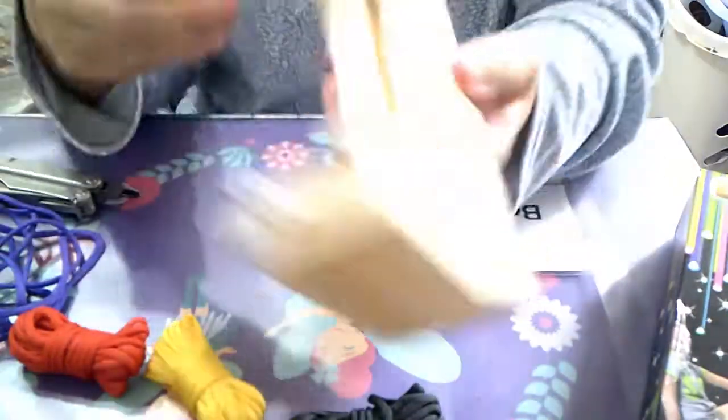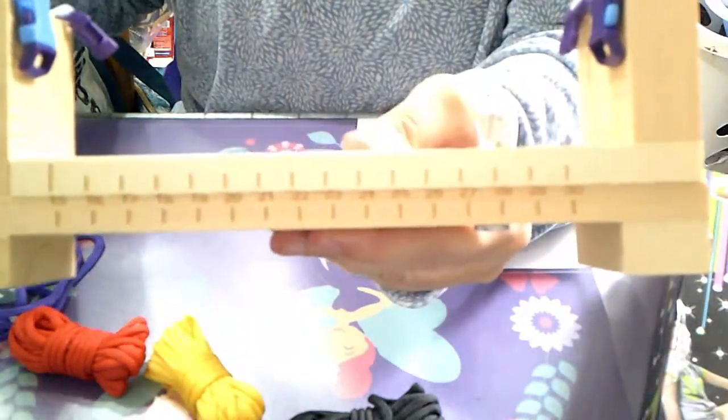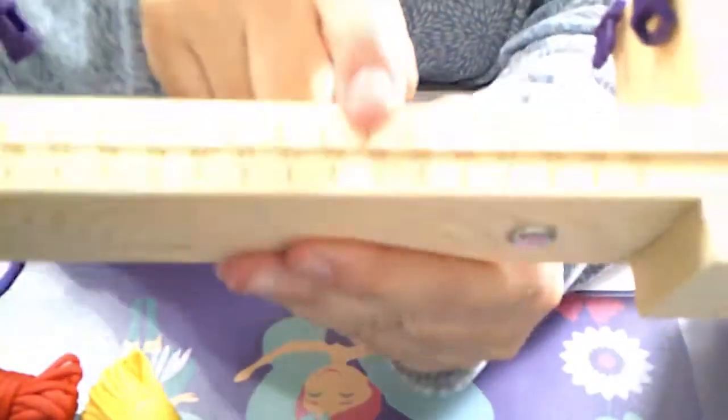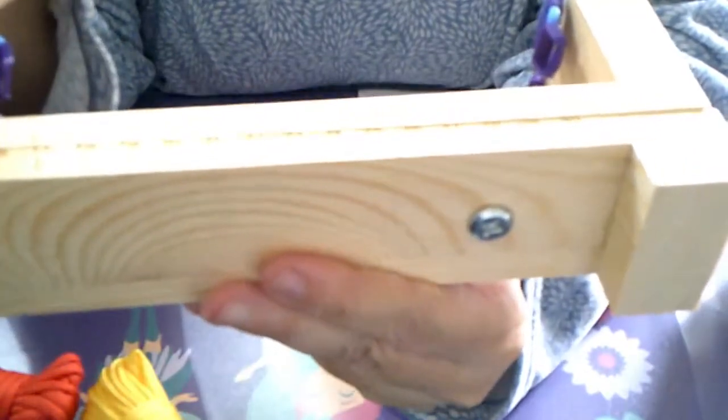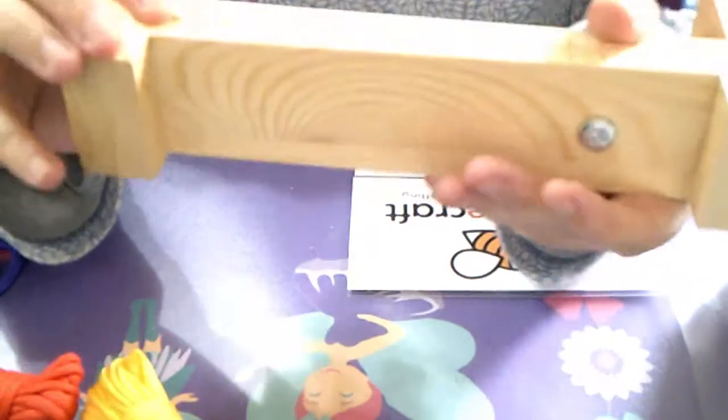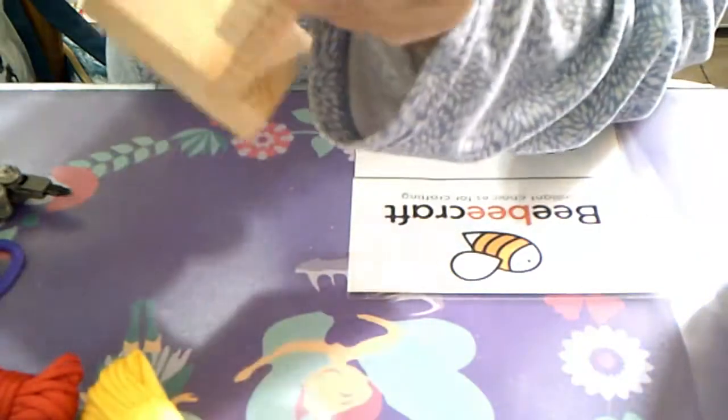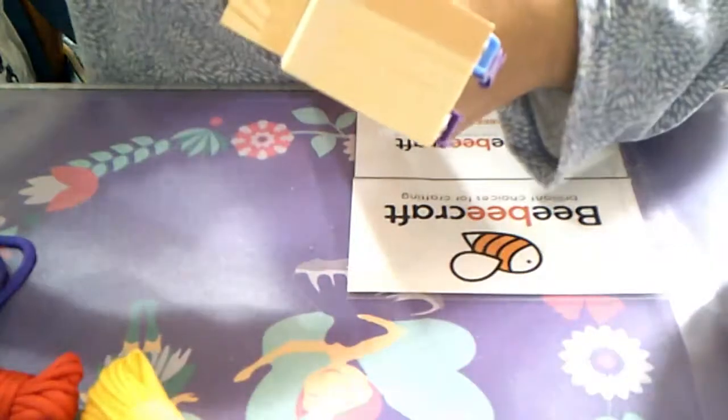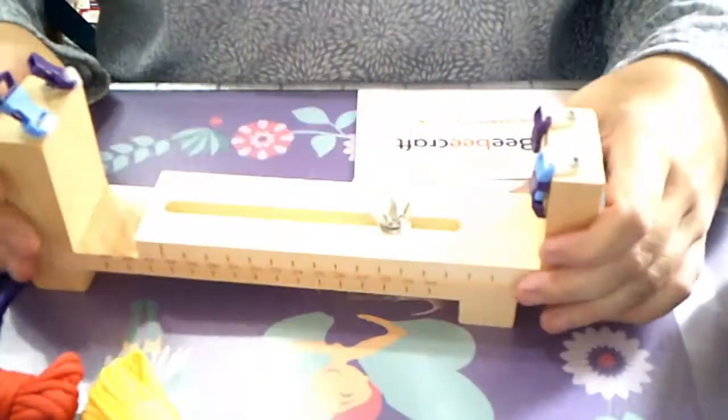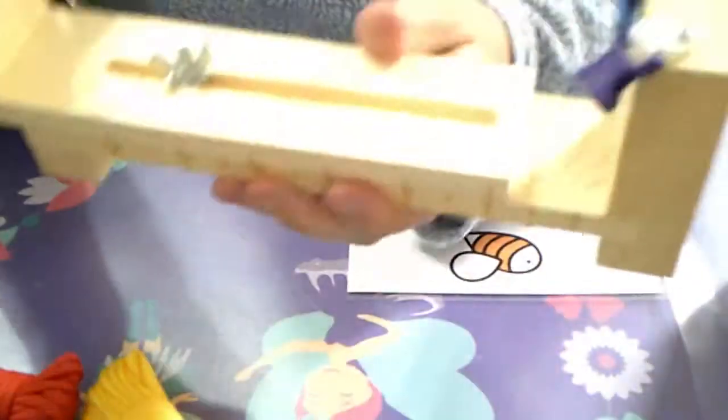Ahora lo que tenemos que hacer, mirar, como veis aquí hay una regleta. Pone en el de abajo 15, 16, 17. Lo vamos a mover porque la medida de mi hija habíamos dicho que era 16 y medio más o menos. Apretamos la arandela esta. Me ayudo de mi Litterman para que no se mueva y luego el telar lo tenemos montado.